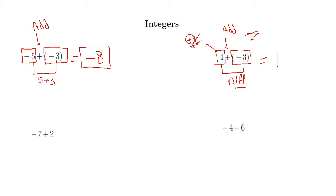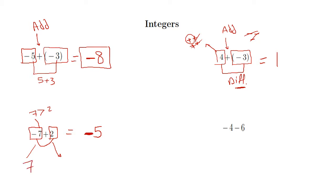For negative 7 plus 2: negative 7 is negative and positive 2 is positive. Notice that 7 is greater than 2, so I put down the sign of the greatest number, which is negative. Then I find the difference between 7 and 2, which equals 5. This is the same as losing 7 points and gaining 2 points — your total loss is 5, so the answer is negative 5.